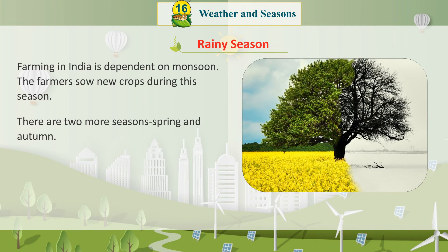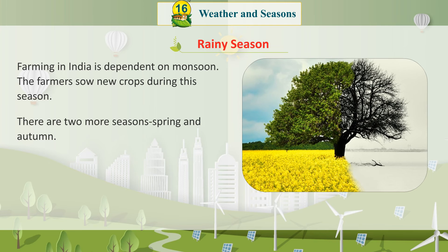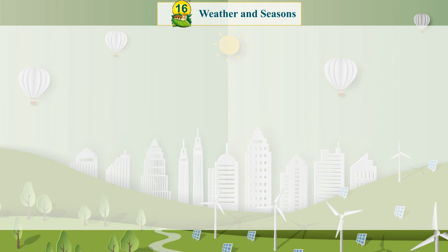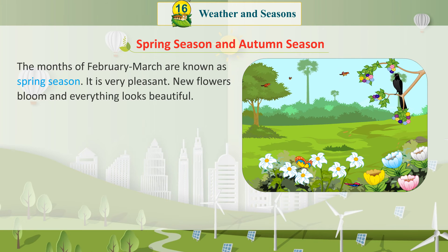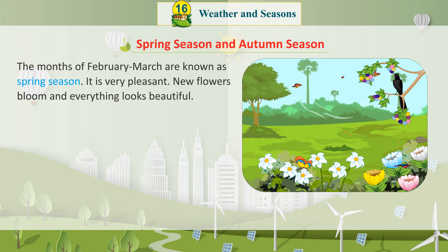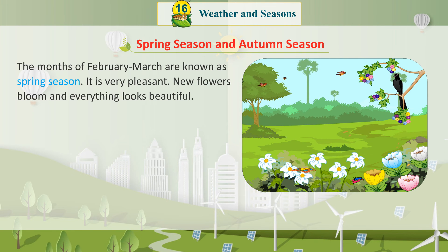There are two more seasons: spring and autumn. The months of February and March are known as spring season. It is very pleasant during this time.